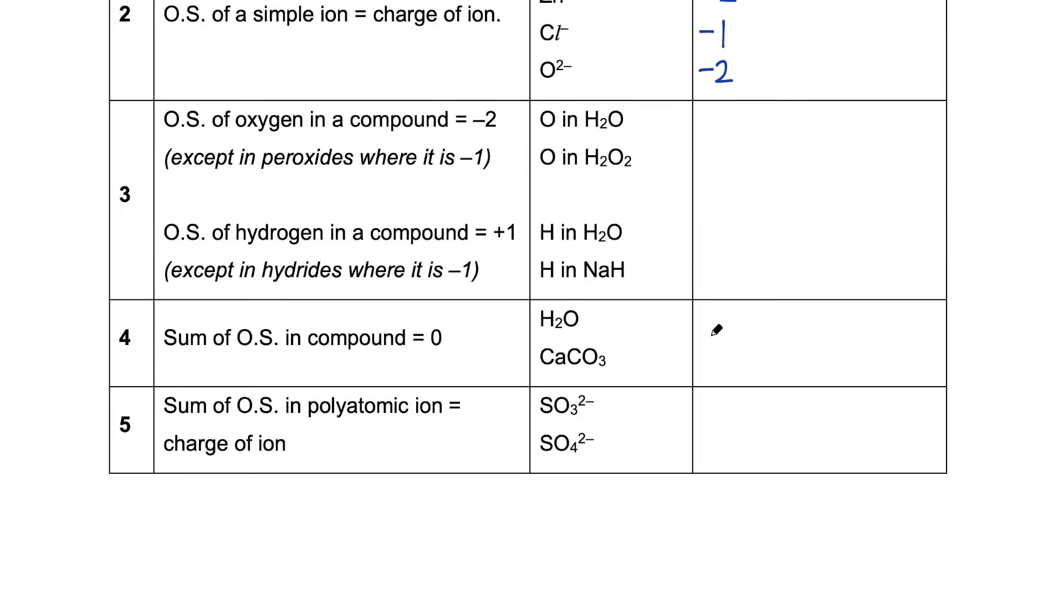We look at rule number three now. Because many compounds contain oxygen and hydrogen, it is useful to know what their oxidation states are. So in a compound, the oxidation state of oxygen is always minus two. For example, water is a compound, right? So the oxidation state of oxygen is minus two.